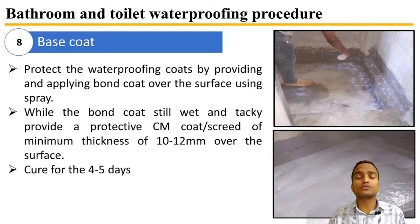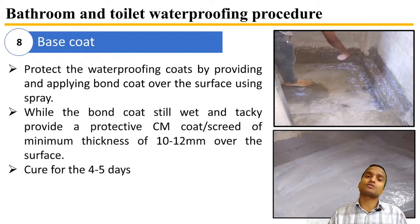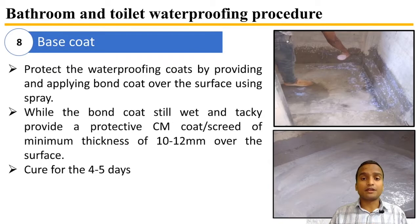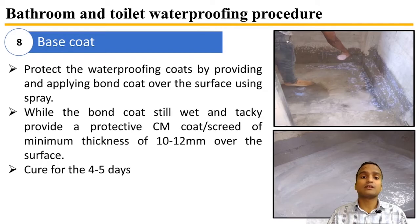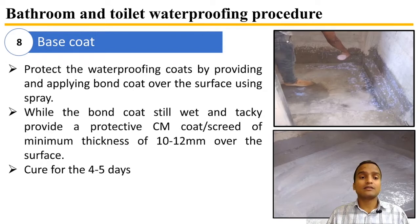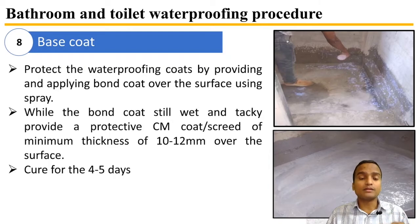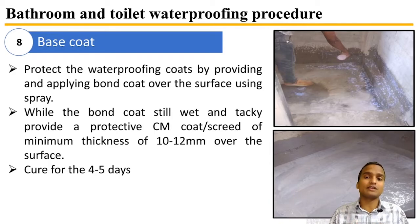After the two waterproofing coats, we apply the base coat — done after one or two days. A bond coat is applied over the entire surface using a spray to protect the waterproofing coats. While the bond coat is still wet and tacky, a protective cement mortar coat of minimum 10 to 12 mm thickness is applied over the surface, followed by curing for the next four to five days.